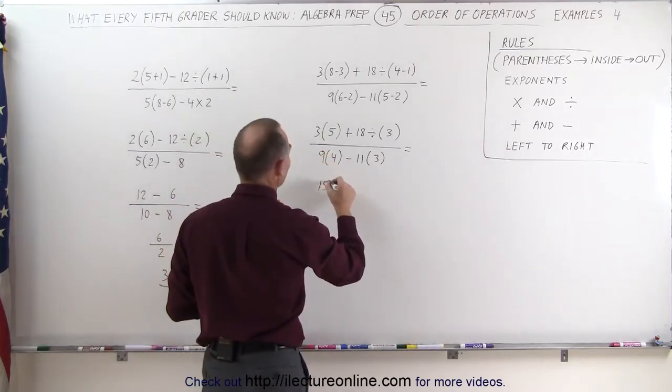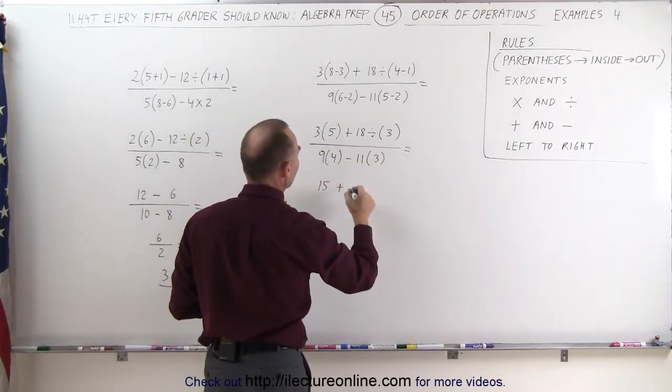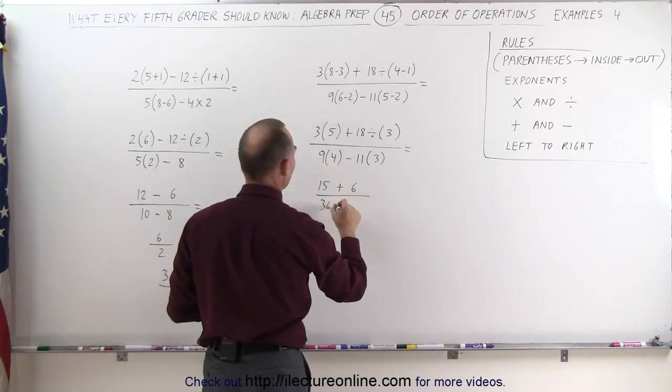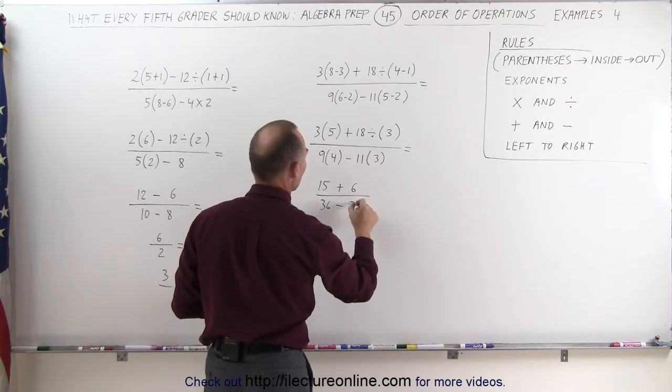3 times 5 is 15, plus 18 divided by 3, which is 6, divided by 9 times 4 is 36, minus 11 times 3 is 33.